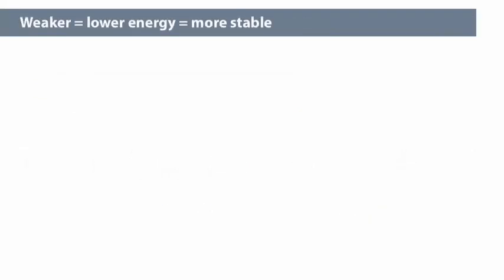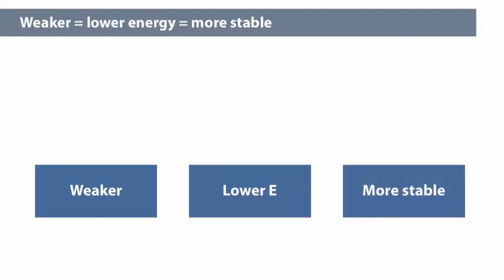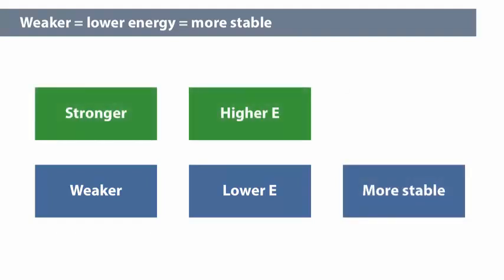Second, there are two sets of terms that are used quite interchangeably. The weaker of a pair of molecules, the lower its energy and the more stable it is. The stronger of a pair has the higher energy and is less stable.